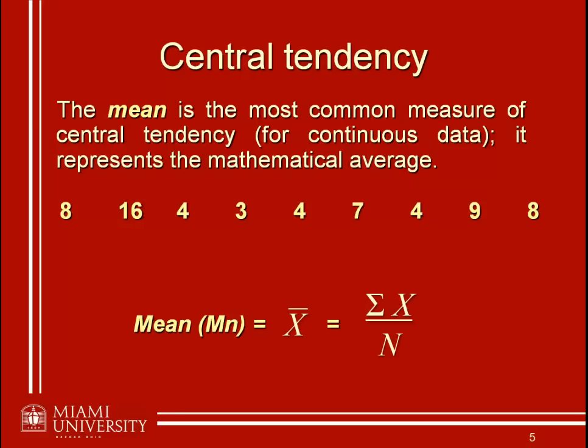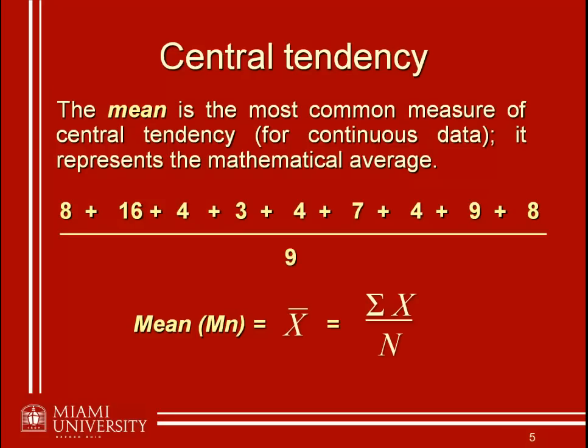We just add up all of our scores here. If we do that, we get a total — you can verify this yourself — of 63. Divided by the fact that there are 9 scores, that produces a mean of 63 divided by 9, or 7 for this set of scores.